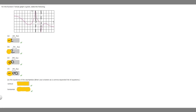Vertical asymptotes are always written as x equals because the x value stays the same. So right here it's going to be x equals 1 because our x value doesn't change. And then the same with this one — this x value is always going to be 3 even though the y changes. So this one is going to be x equals 3.